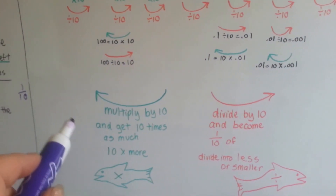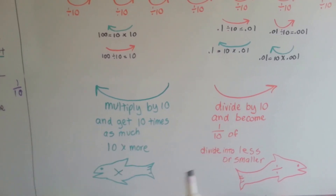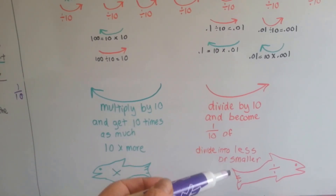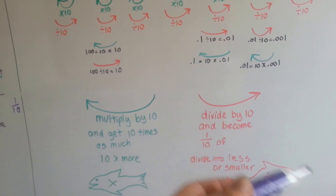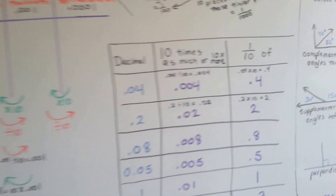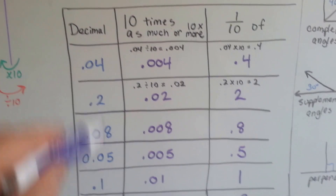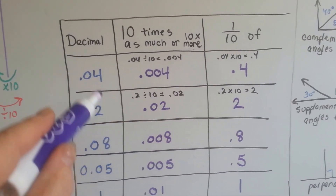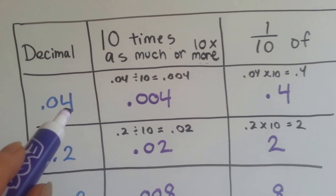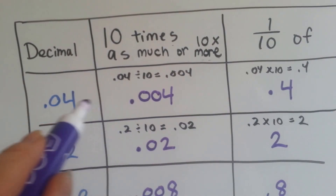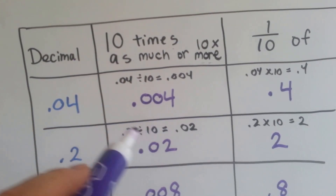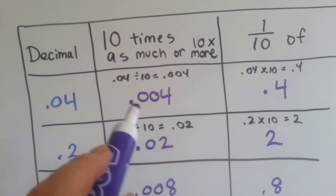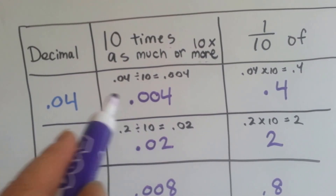You multiply by ten to get ten times as much or ten times more — the fishy swims that way — and you divide by ten to become one-tenth of, dividing into less or smaller pieces going this way. So let's take a look at this chart. It wants us to take these decimals and write which would be ten times as much, or one-tenth of. Point zero four is four hundredths. Ten times — what number is this ten times bigger than? It's ten times bigger than four one-thousandths. We added another zero and moved the decimal point over.